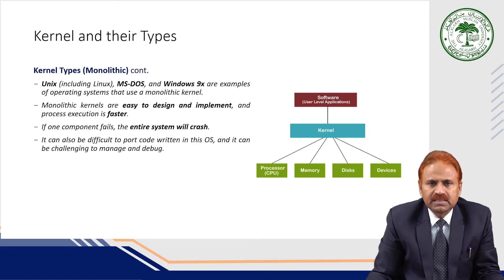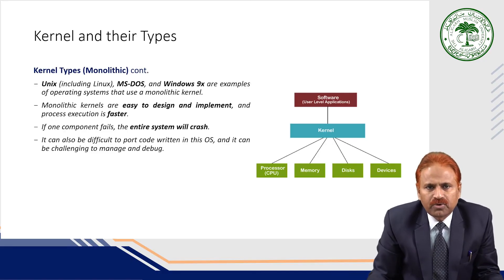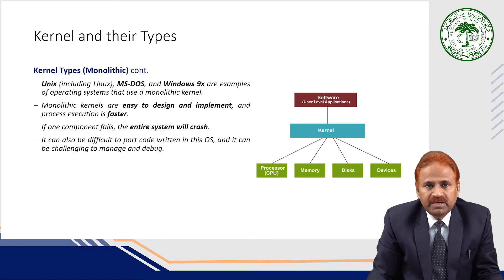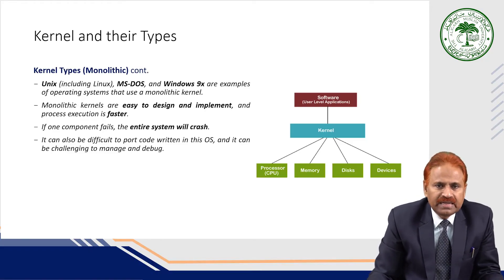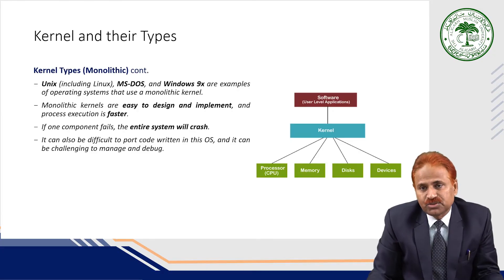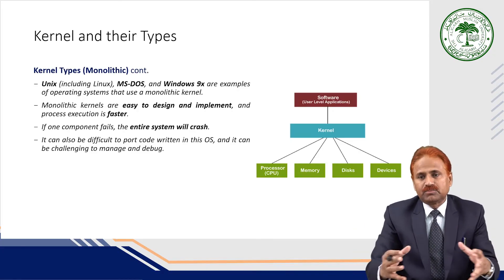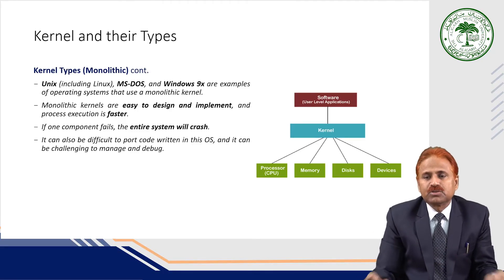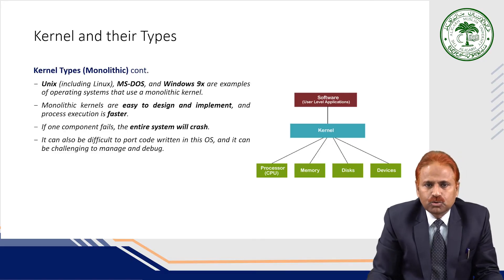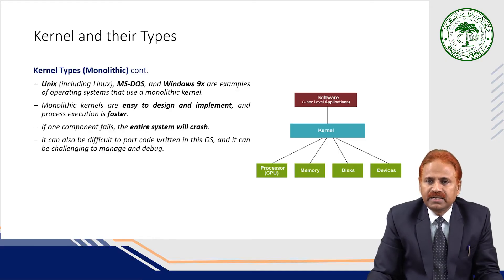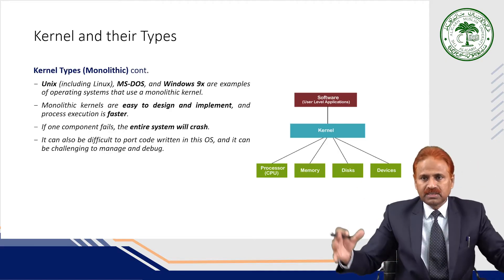Unix, including Linux, MS-DOS, and Windows 9x are examples of operating systems that use monolithic kernels. Monolithic kernels are easy to design and implement, and process execution is faster. However, if one component fails, the entire system will crash because it is monolithic in architecture. It can also be difficult to port code written for this operating system, and it can be challenging to manage and debug due to its monolithic architecture.